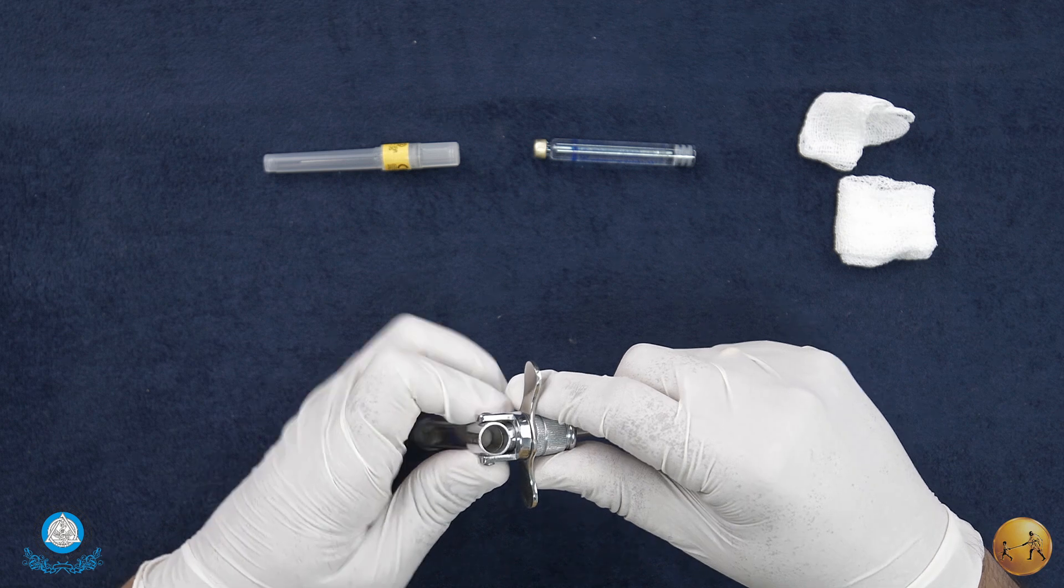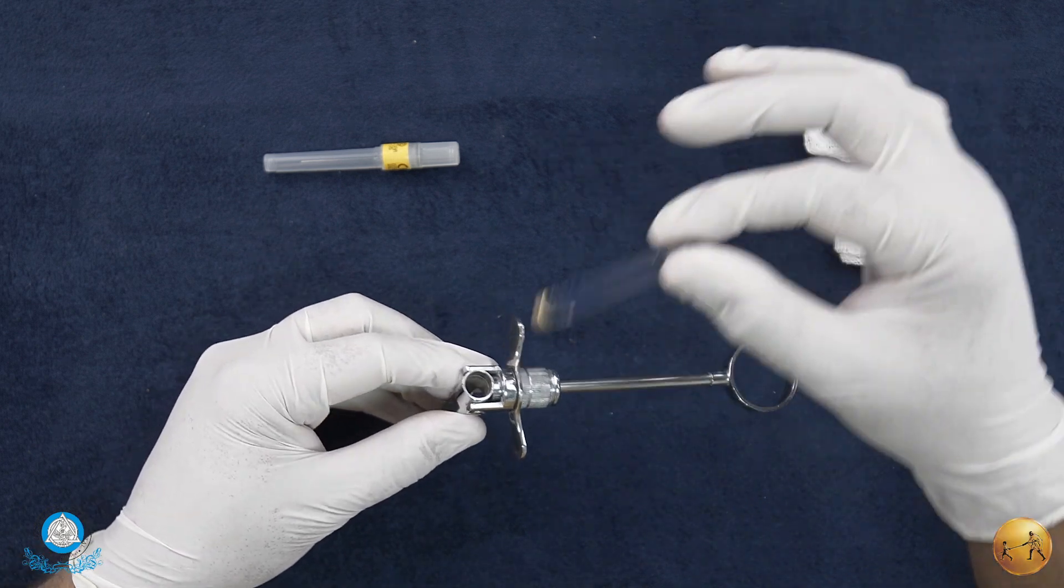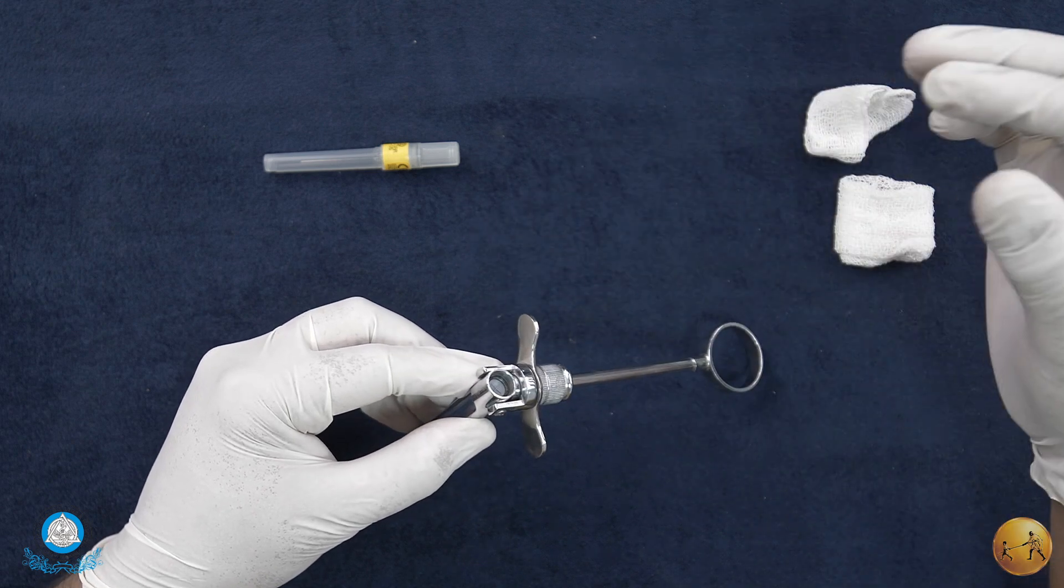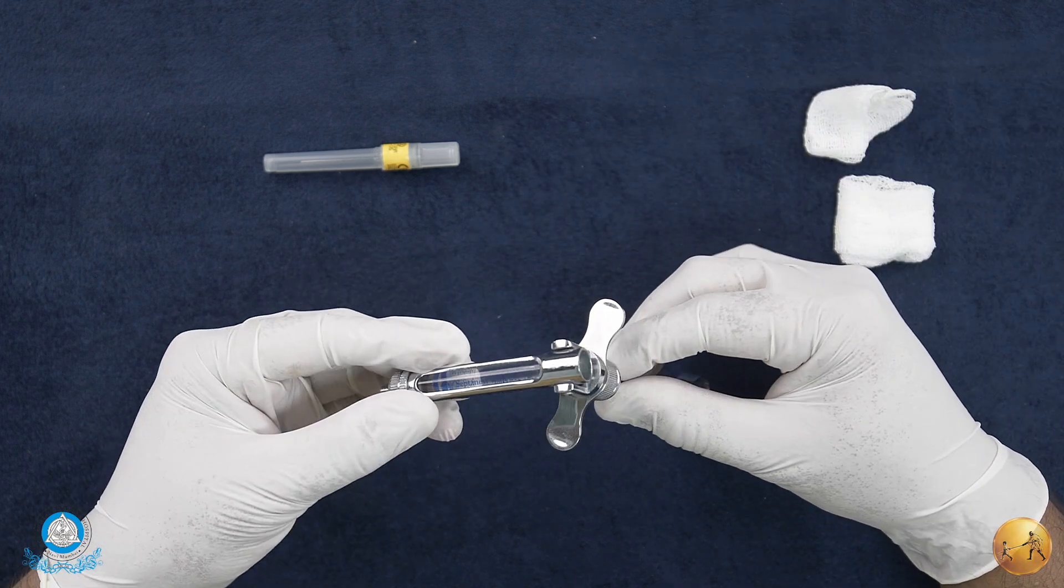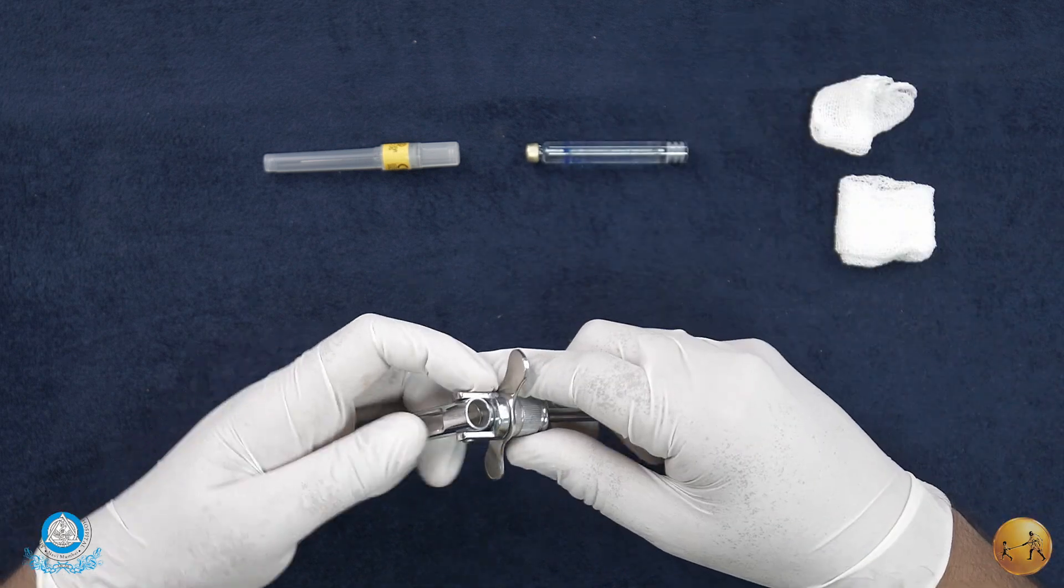To show you how it's loaded - this is an end loading system. This is where the cartridge goes in, like this. You can see the cartridge in place.